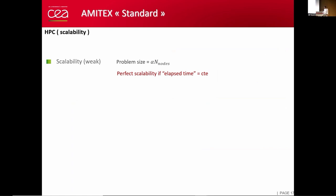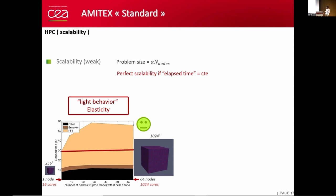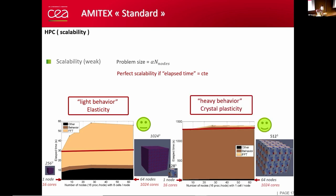In terms of scalability, I propose a weak scalability where the problem size increases with the number of nodes. For perfect scalability, the elapsed time should be constant. Here it depends on the behavior law. For light behavior, for example elasticity, this is very efficient. We spend a lot of time in FFT and are not exactly perfect, but it's not so bad. On the contrary, for heavy behavior, every non-linear behavior, you spend a lot of time in behavior which is perfectly parallel, and the FFT is just a small part of the total time. So you have a perfectly scalable application in that case.